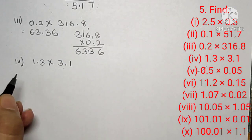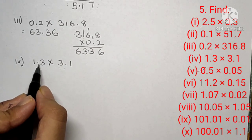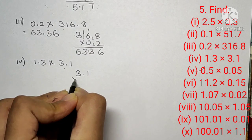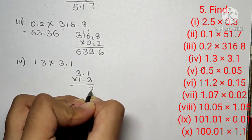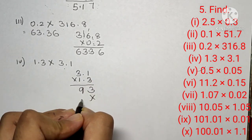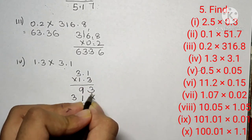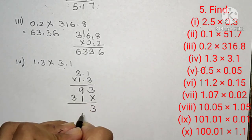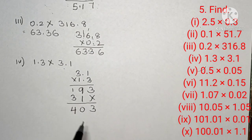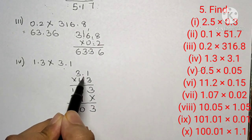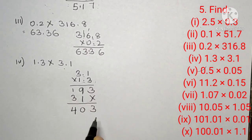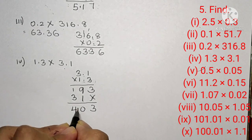Question number five, fourth part is 1.3 into 3.1. Let's multiply: 3 ones are 3, 3 threes are 9, then 1 ones are 1 and 3 threes are 3. So 9 plus 1 is 10, 3 plus 1 is 4. There are two decimal points, both one digit from the last, so two digits from the last.